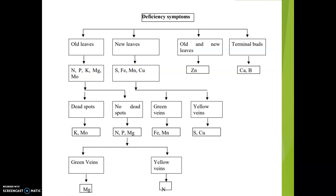We can have a quick glance at deficiency symptoms shown by different essential elements. If the deficiency symptom is visible in all the leaves, it may be due to deficiency of nitrogen, phosphorus, potassium, magnesium, or molybdenum — since these minerals are mobile in nature. For sulfur, iron, manganese, and copper, these are immobile in nature and the deficiency will occur in the new leaves.